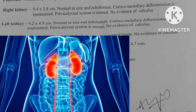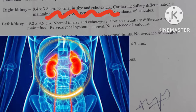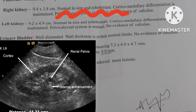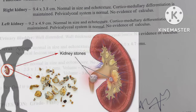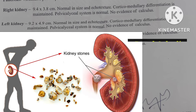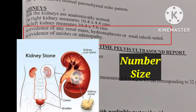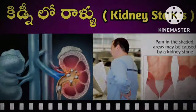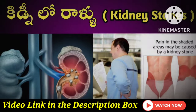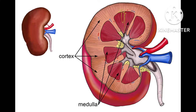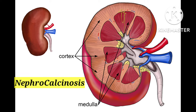Next are the kidneys, organs present at the back. If normal in size, they mention normal; if enlarged, they mention enlarged kidneys. Generally, the left kidney is bigger than the right kidney. They also mention ecotexture. Kidney stones are medically called kidney calculi, renal calculi, or nephrolithiasis. The report notes whether stones are single or multiple and their size in mm. If there is calcium deposition in the renal cortex and renal medulla, the condition is called nephrocalcinosis.